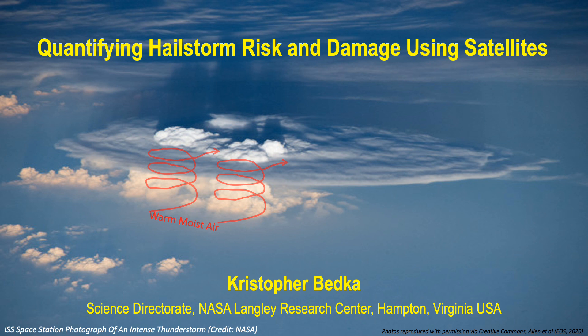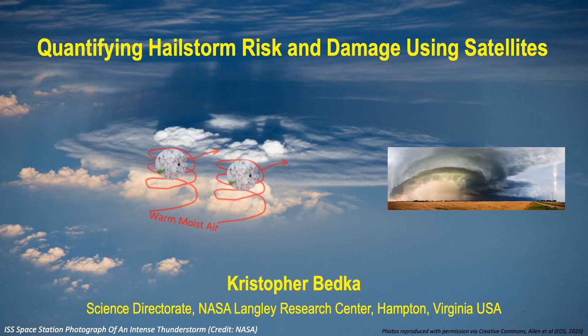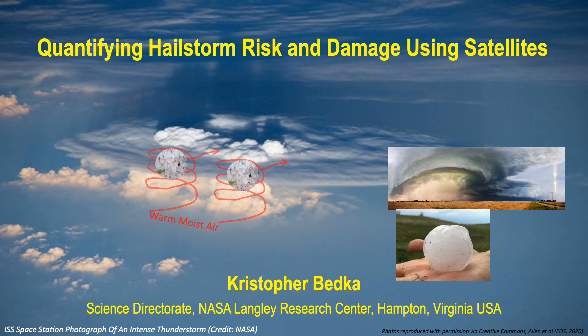We have warm, moist air that is ingested into the updraft region of thunderstorms. These updrafts rise very quickly and also rotate. These rotating, intense updraft regions produce unique patterns within cloud tops that we can see from the space station and from satellites. These patterns include very bumpy cloud tops above the updrafts that are also very cold and have many other unique patterns we can use to detect these storms. As this air rises within the updrafts, water droplets form, they freeze, and water continues to accrete on these frozen hail embryos, and hail forms in storms. You can see how menacing these storms can look from the ground, and they produce hail of various sizes and shapes.